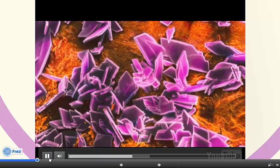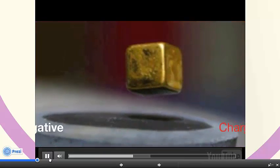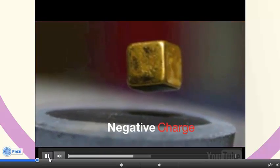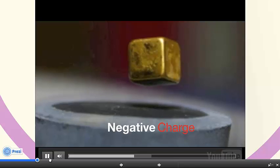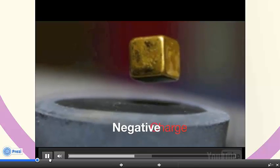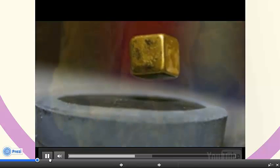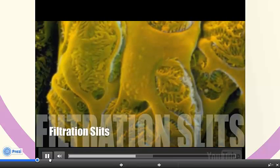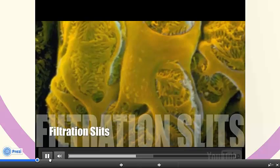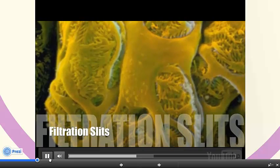Blood albumin does not pass through even though it is small enough to pass through the spaces. However, it has a negative charge so it is repelled by the basement membrane. The third barrier in the filtration membrane is the filtration slits made of podocytes.